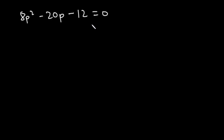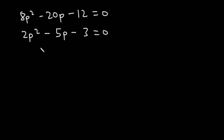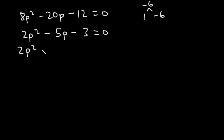Now let's divide through by 4, giving us 2p² - 5p - 3 = 0. We multiply 2 and -3 to get -6. Factors of -6 that work are 1 and -6, so we expand to 2p² + p - 6p - 3 = 0.